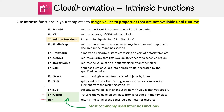Let's go to the top of the list and see what kind of stuff we can do with intrinsic functions. The first one is Base64. This returns the Base64 representation of the input string.